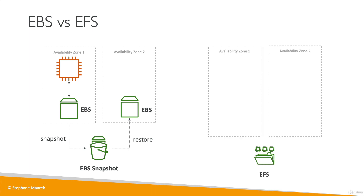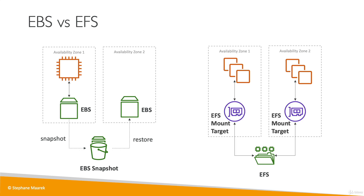EFS is a network file system, meaning whatever is on the EFS drive is shared by everything that is mounted to it. So if you have many instances in availability zone one and many instances in availability zone two, all these instances can mount the same EFS drive using a mount target and they will all see the same files. That makes it a shared file system.